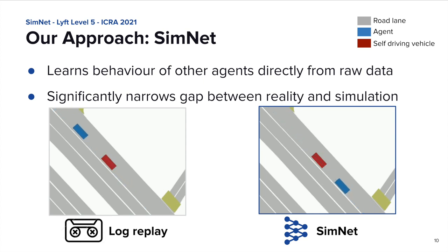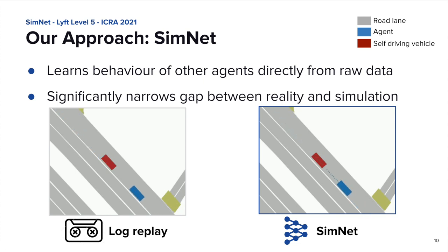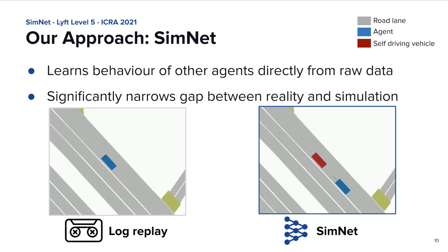Take this scene, for example, where our SDV has been manually stopped. If we were to use log-replay agents, the car behind would just run over us without noticing. Now, after training our SimNet, we can use it to control that agent. This time, the car behind properly stops and keeps its distance. Next, I will tell you more about how SimNet works, and show you some interesting qualitative and quantitative results.